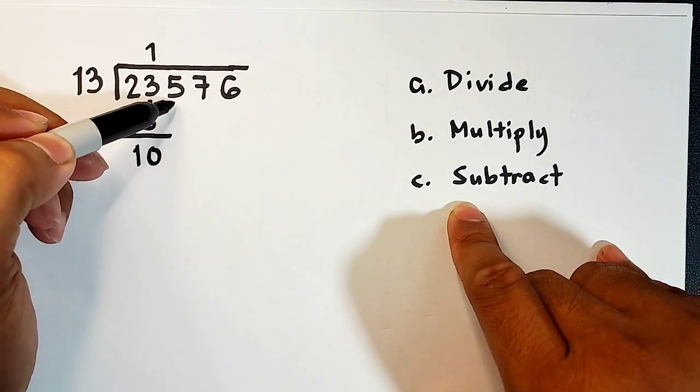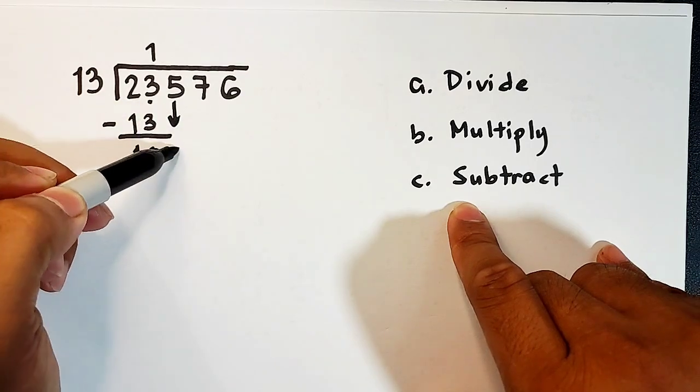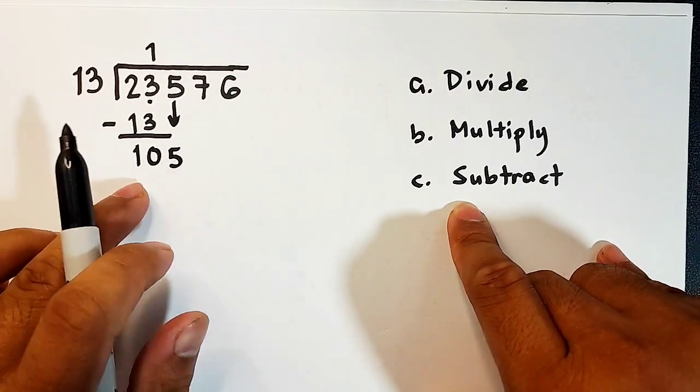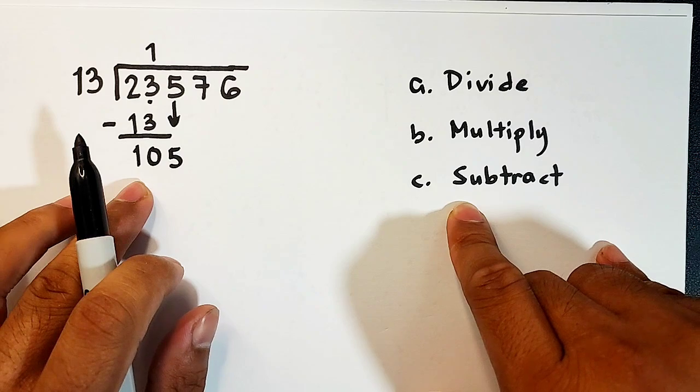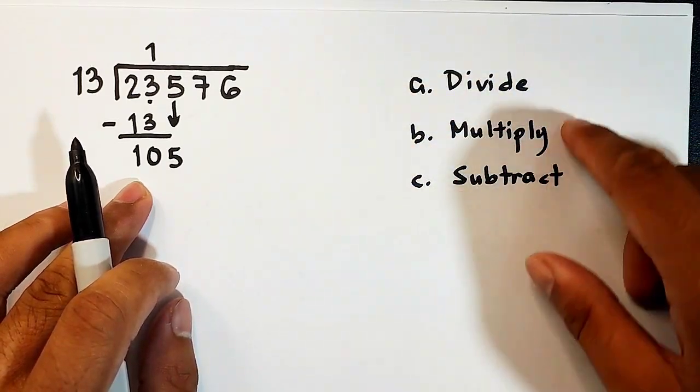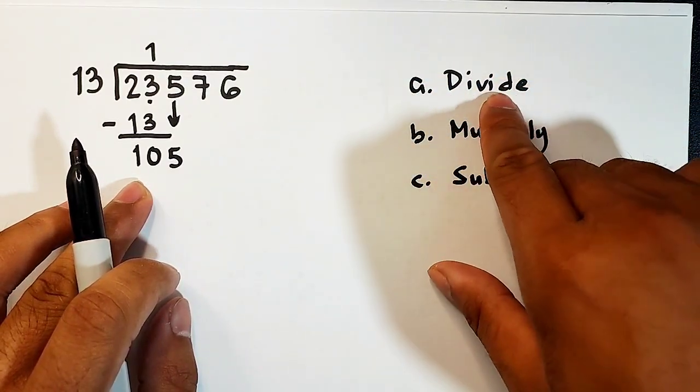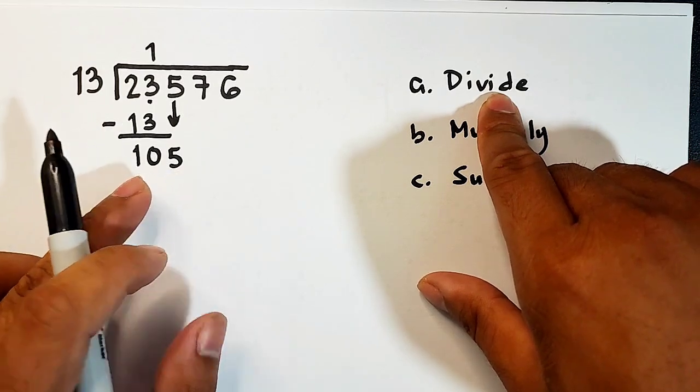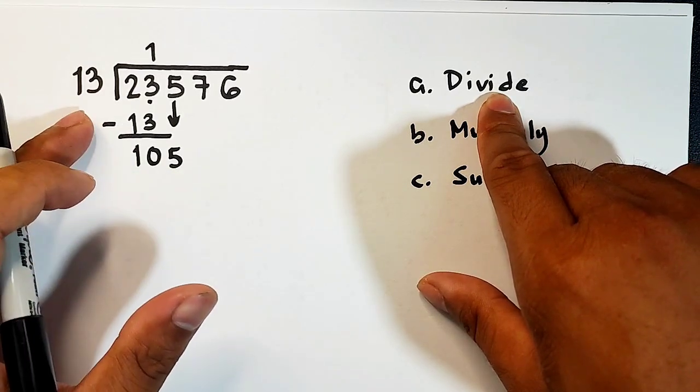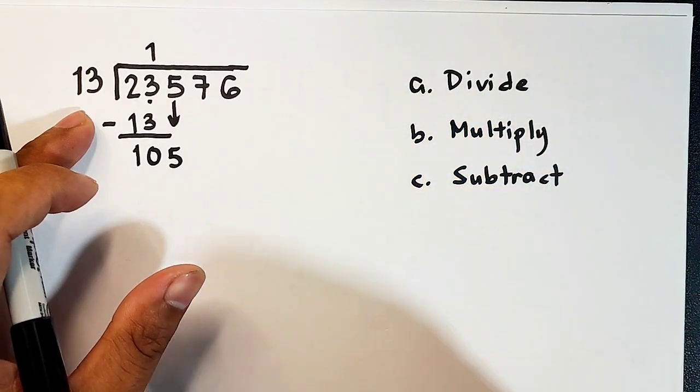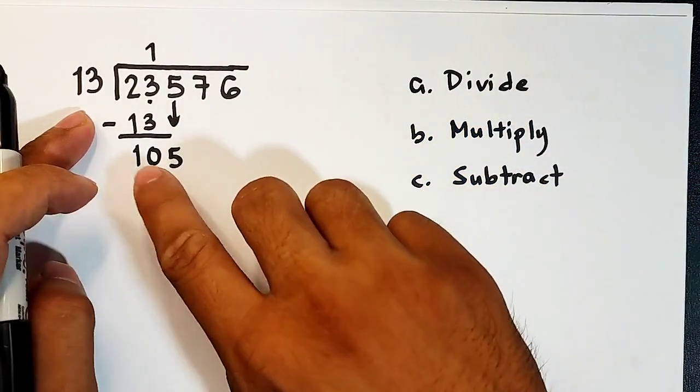And then after this, we will bring down 5. So right now, this is 105. We will repeat these steps. We need to divide, but this time, we will focus here. 105 divided by 13.